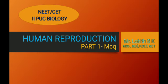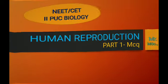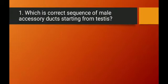Hello students, let us discuss some MCQs from the chapter Human Reproduction. It mainly includes questions from topics like the structure of the male reproductive system, the structure of the female reproductive system, and gametogenesis — including spermatogenesis as well as oogenesis. Let us start from question number one: what is the correct sequence of male accessory ducts starting from the testis?